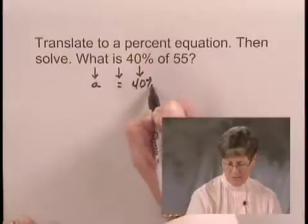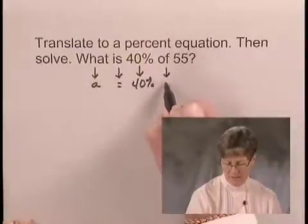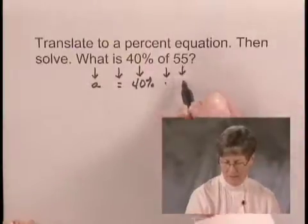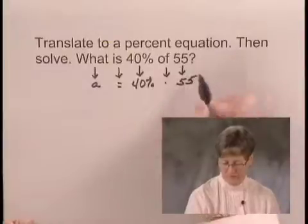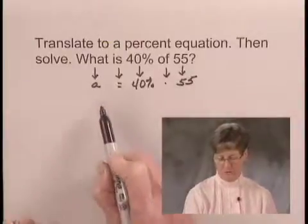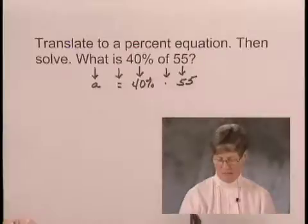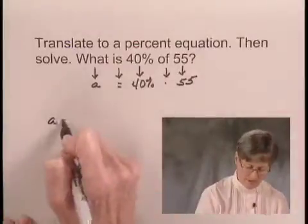40% of translates to multiplication, and then we have 55. So we have the percent equation A equals 40% times 55. To solve this equation,